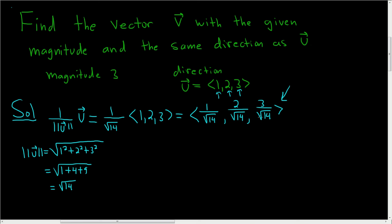We want a vector in the direction of u with magnitude 3. So all we have to do is multiply this by 3. So our final answer is 3 times this vector: 1 over the square root of 14, 2 over the square root of 14, and 3 over the square root of 14.